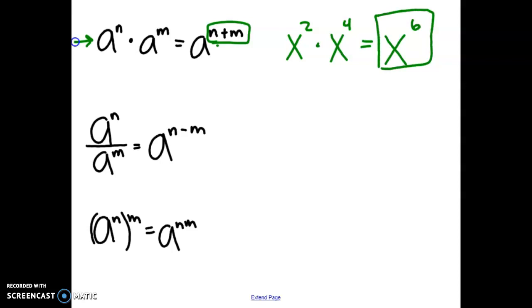The division property, when we see division happening, that's this one right here, is that we do need to subtract the exponents. So if we have a to the tenth power divided by a to the third power, we would subtract those exponents to get a to the seventh power.